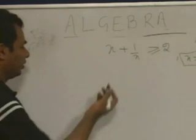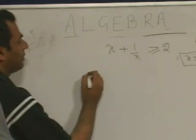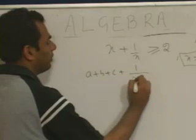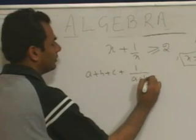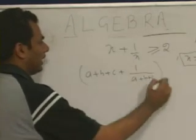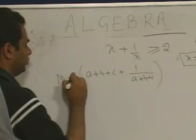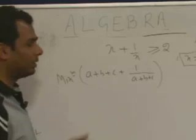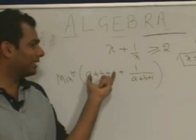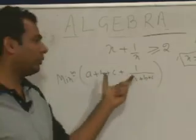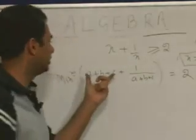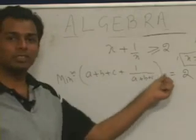For example, what is the minimum value of (a plus b plus c) plus 1 upon (a plus b plus c)? If we take (a plus b plus c) as x, then this is x plus 1/x. So the minimum value of this expression is 2.